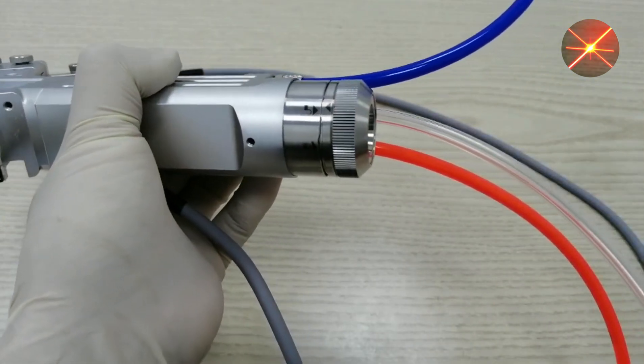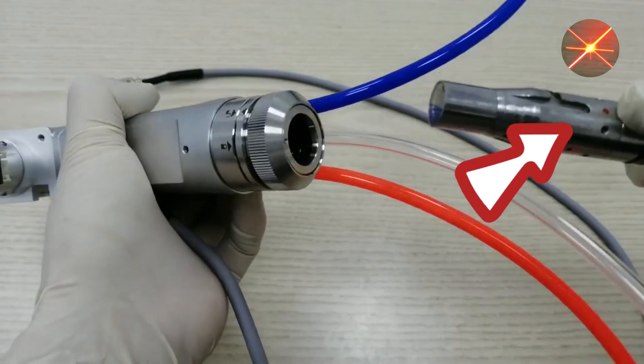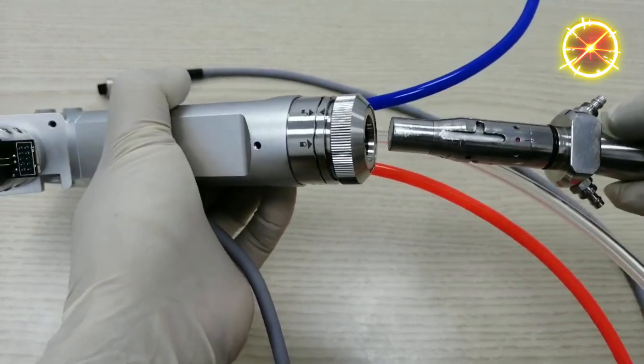Then plug the QBH in. There is a mark on the QBH - see that red dot. The notation corresponds to the interface. Align the mark and insert.